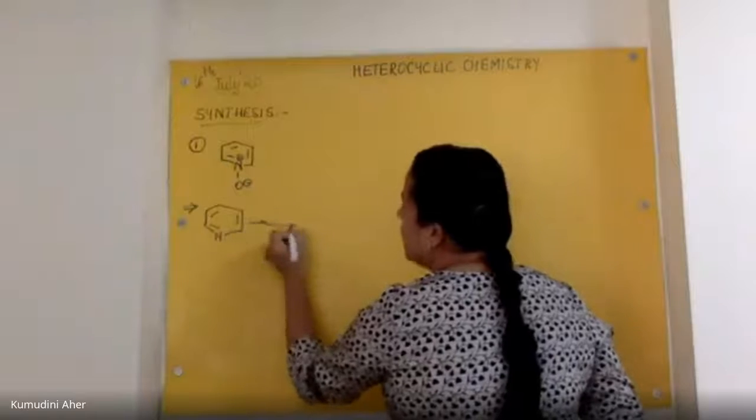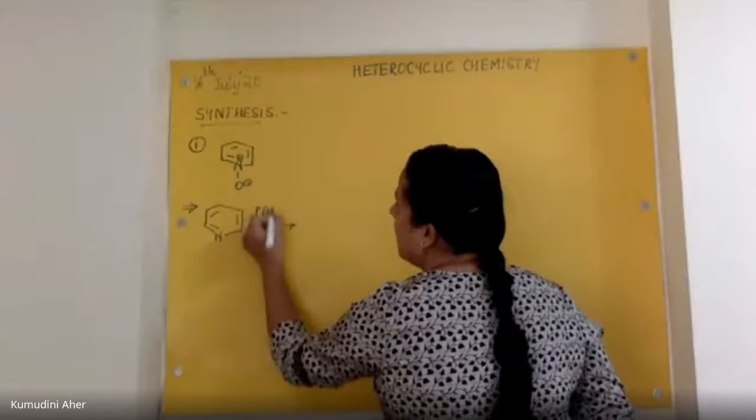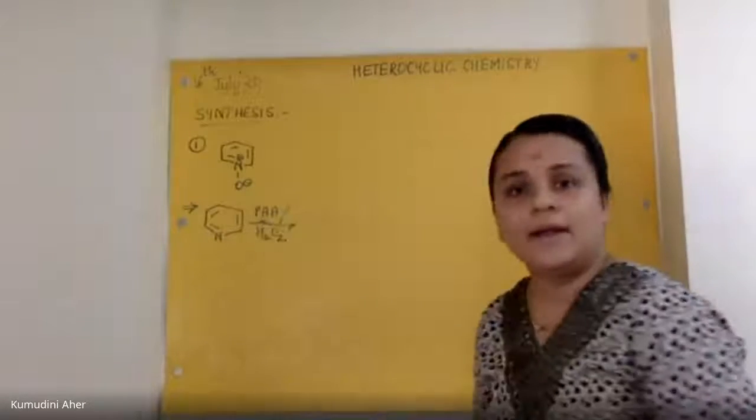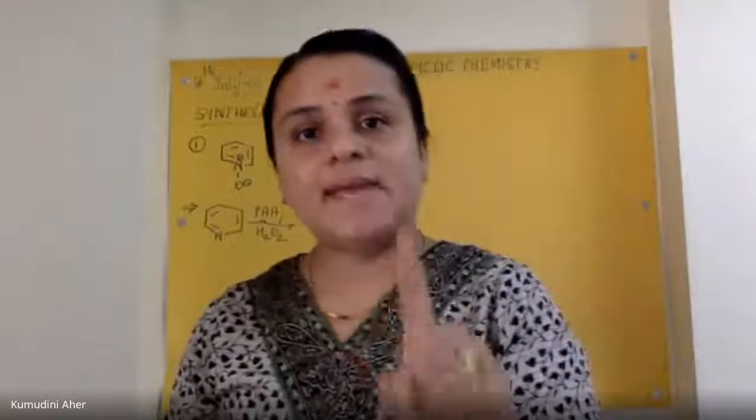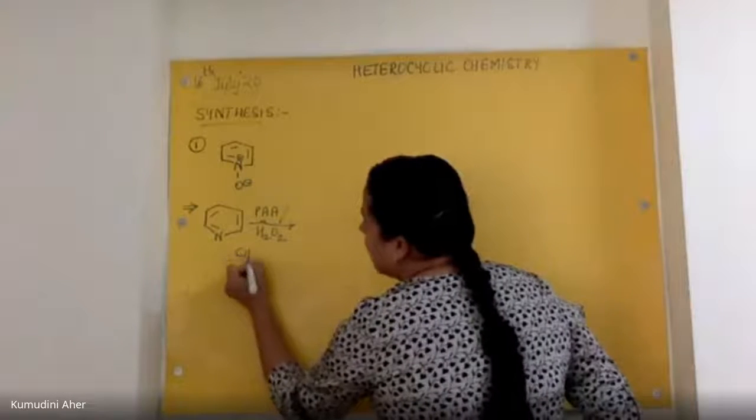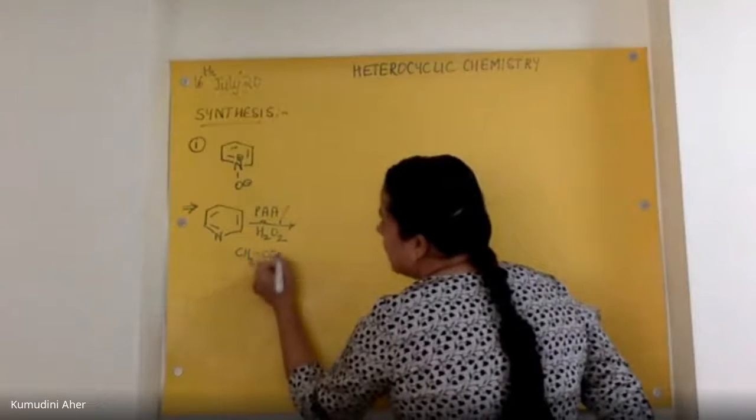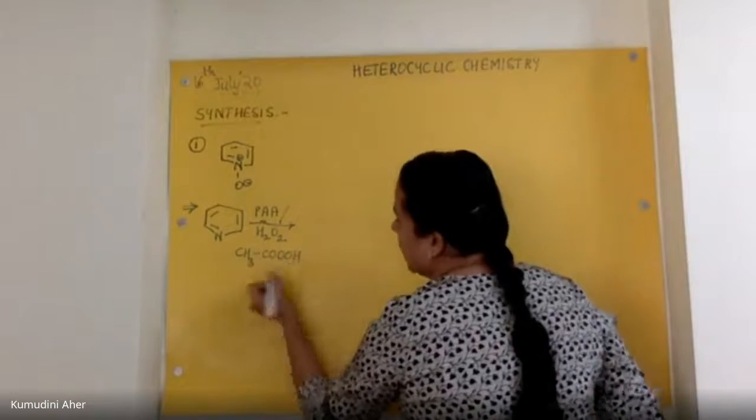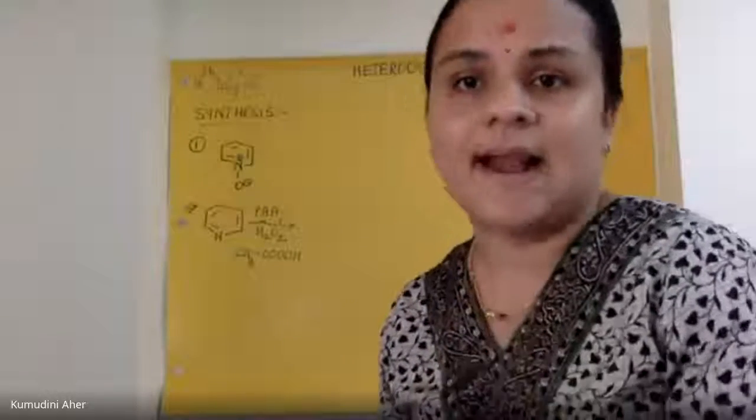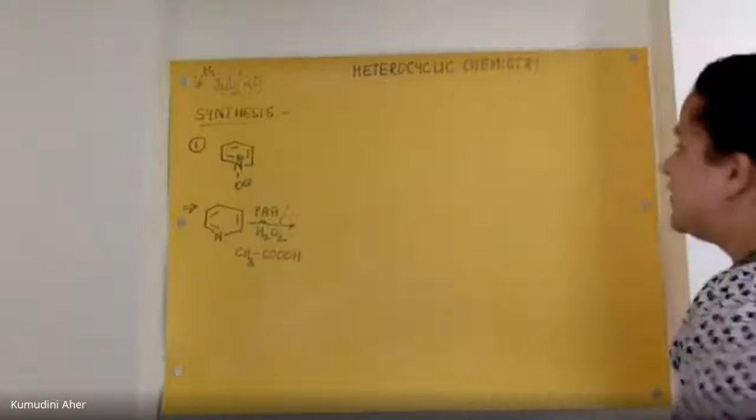And I am going to add peracetic acid or I will be adding hydrogen peroxide. PAA stands for peracetic acid. CH3COOO3, there are three oxygens. This is a peroxy radical. Now, straight away, when this peroxy radical... Okay, let me rejoin this back.